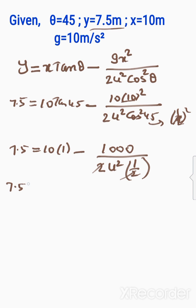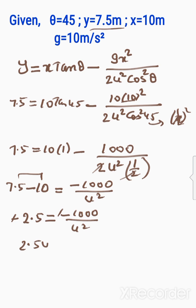Bringing 10 to the other side: 7.5 minus 10 equals minus 1000 divided by u². So 7.5 minus 10 is minus 2.5 equals minus 1000 divided by u².